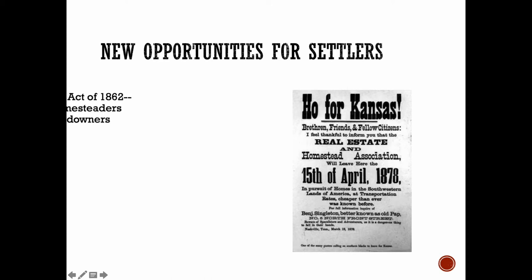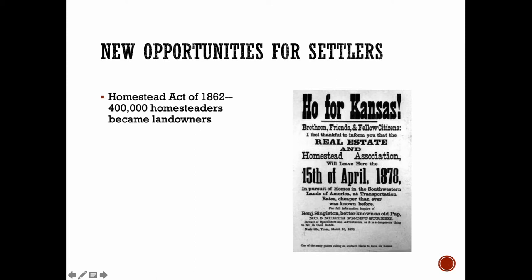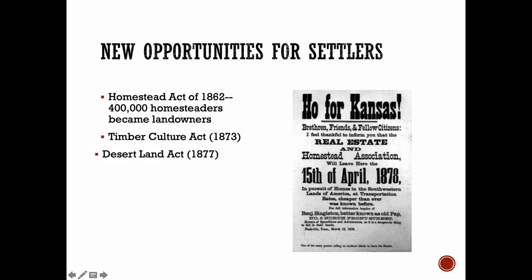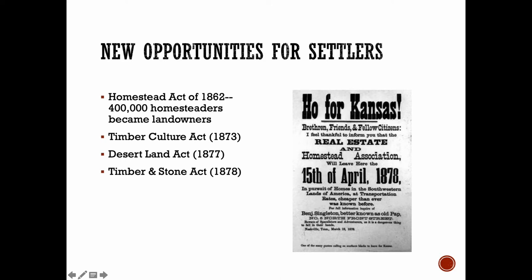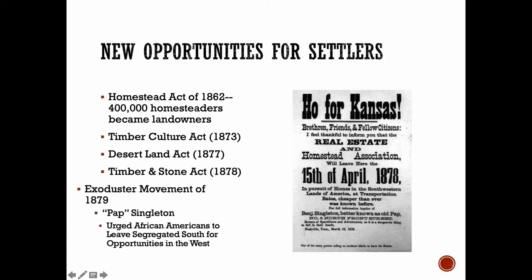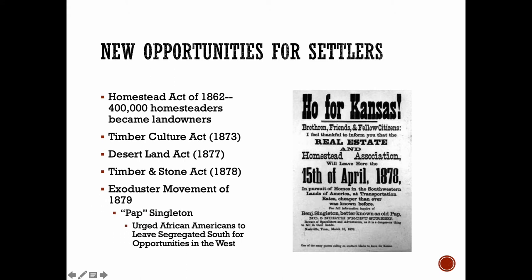There were new opportunities for settlers as well, many as a result of the Homestead Act of 1862. Some 400,000 homesteaders moved into the West and became landowners. Because the land in the West wasn't as wet or fitted for growing crops, more and more land was added to the amount you could claim, including through the Timber Culture Act, the Desert Land Act, and the Timber and Stone Act. I also want to mention the African Americans who were moving West and taking advantage of free land through the Homestead Act — these were called Exodusters. Their leader and advocate was Benjamin 'Pap' Singleton, who said that African Americans should go West, get away from the segregated South, and own their own land.